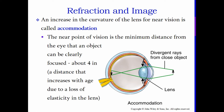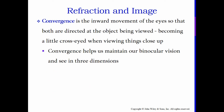An increase in the curvature of the lens for near vision is called accommodation. The near point of vision is the minimum distance from the eye at which an object can be seen clearly — that is about four inches. At four inches from my face, I'm not going to be able to focus; it will be blurry. This distance increases with age due to loss of elasticity of the lens. At 50 years old, my near point has changed to about a foot — 12 inches — and anything inside that requires my reading glasses.